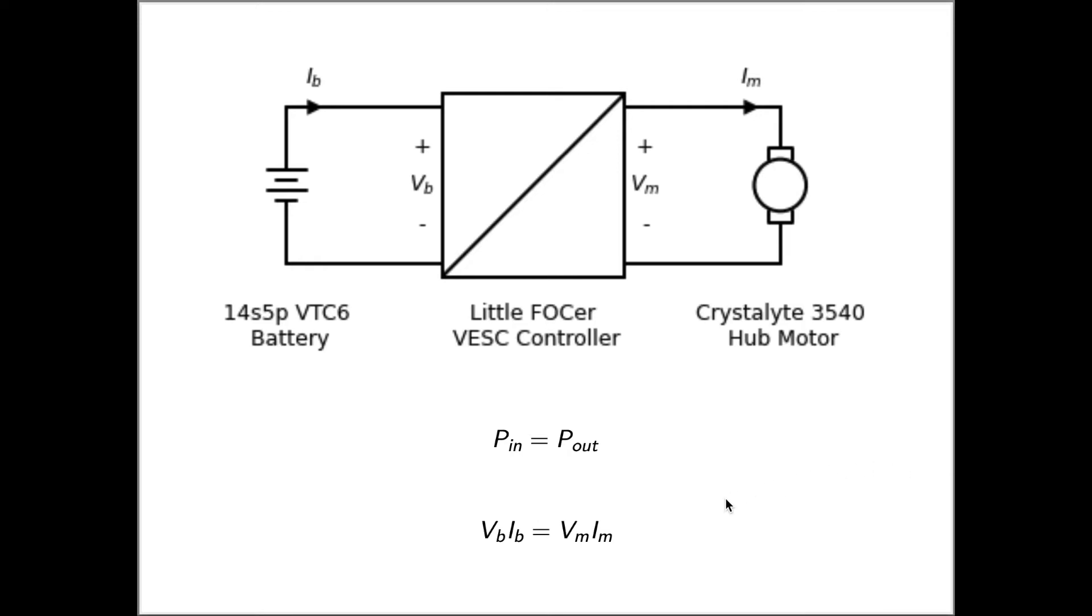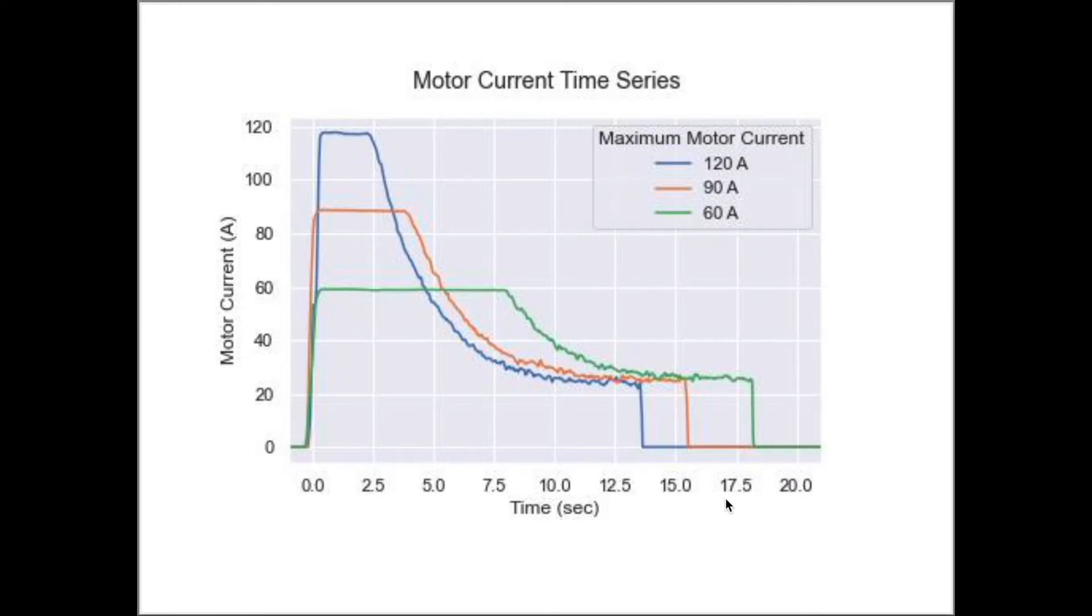Eventually, we hit the top speed where the motor torque and thrust is equal to the wind and road resistances. In the motor current time series graph,